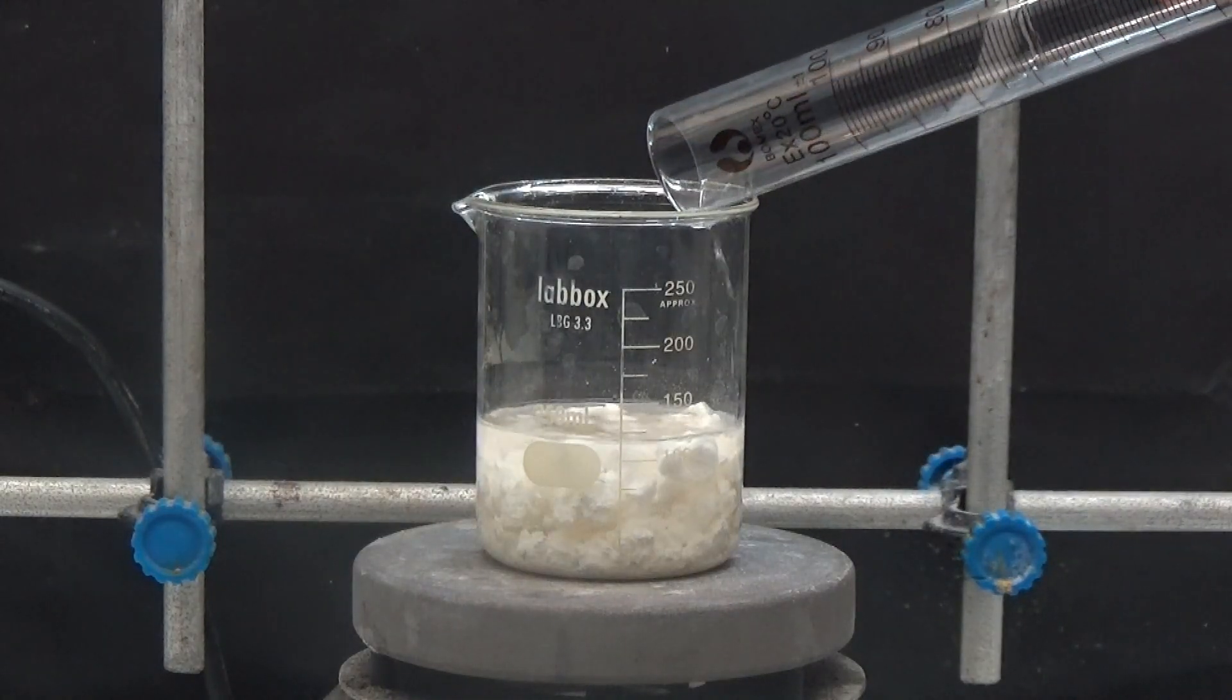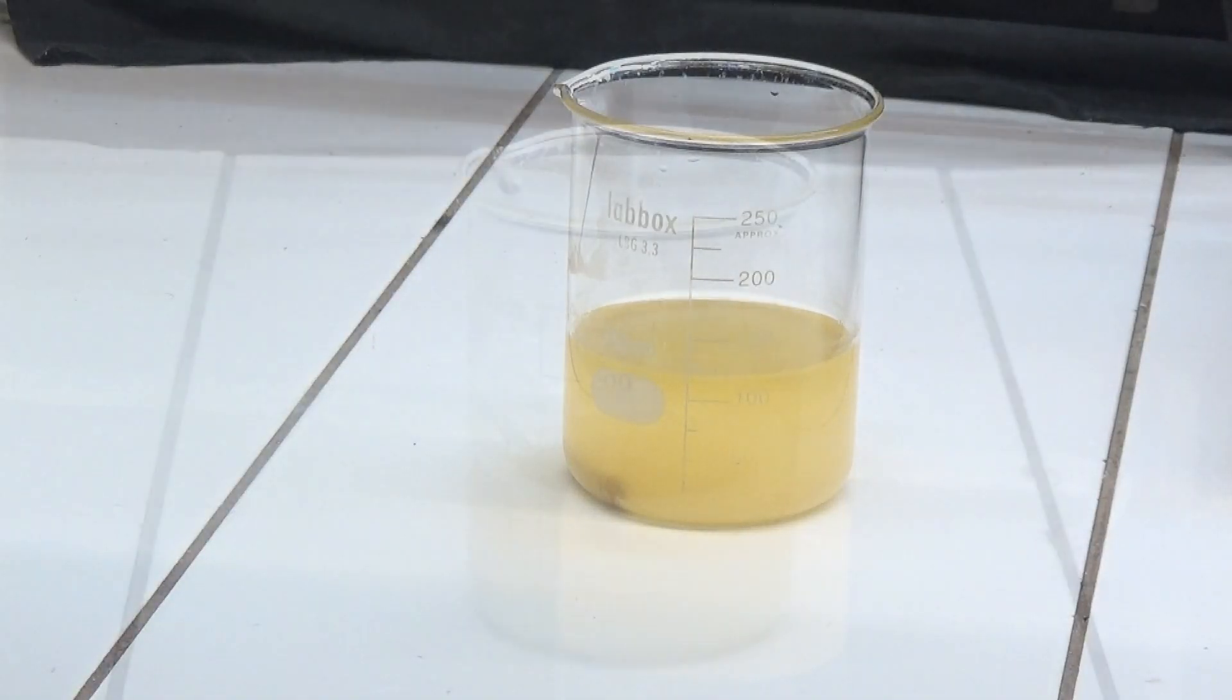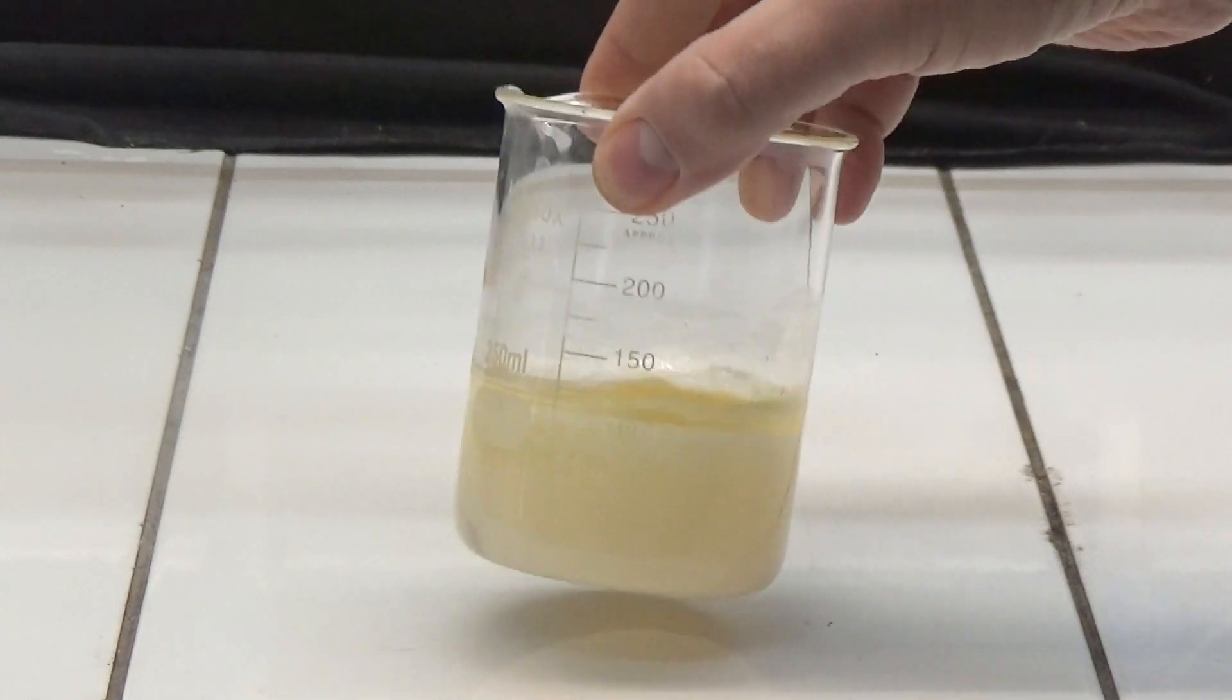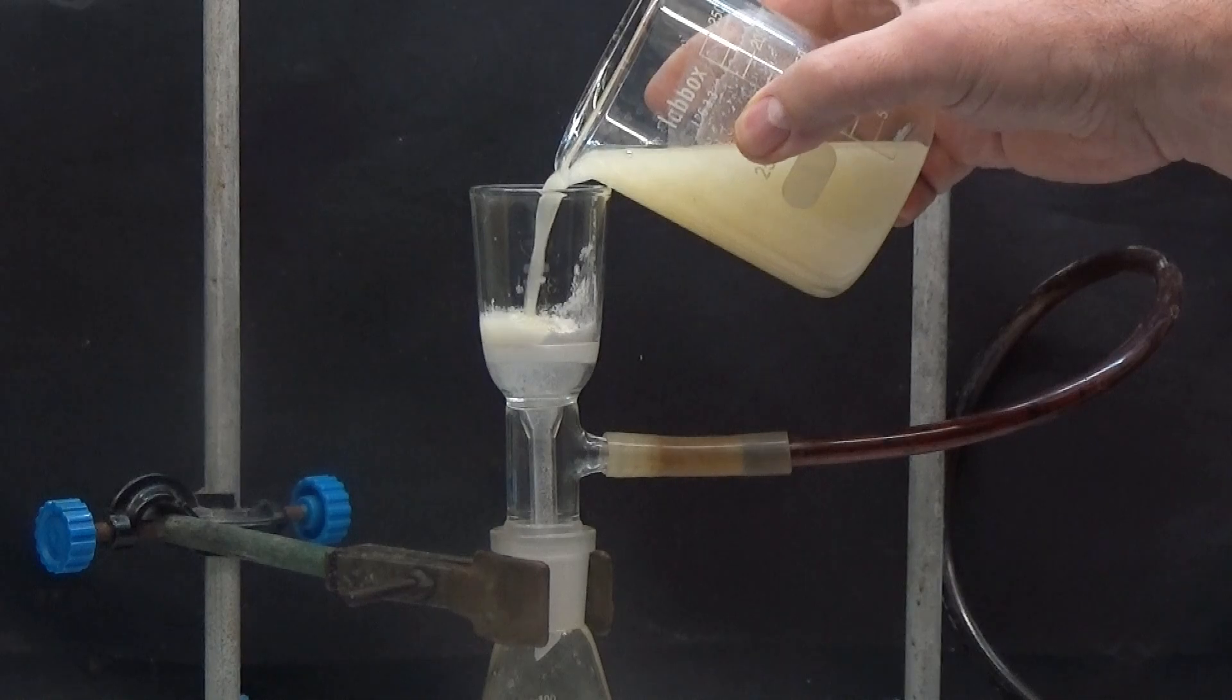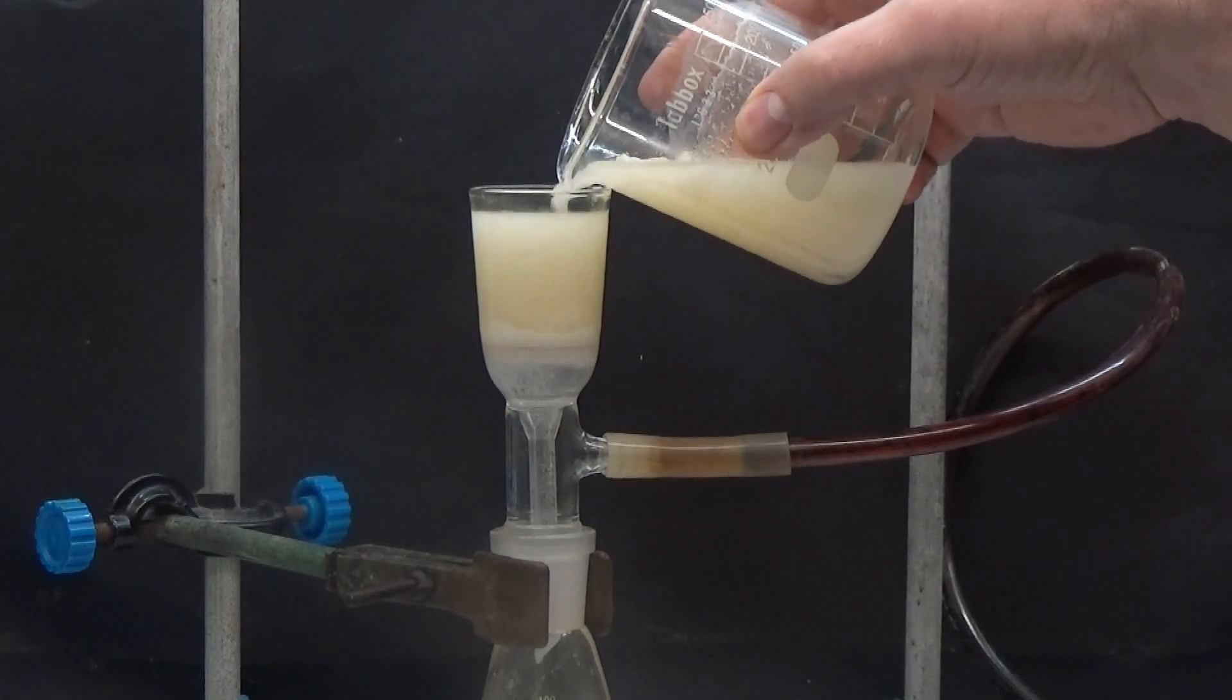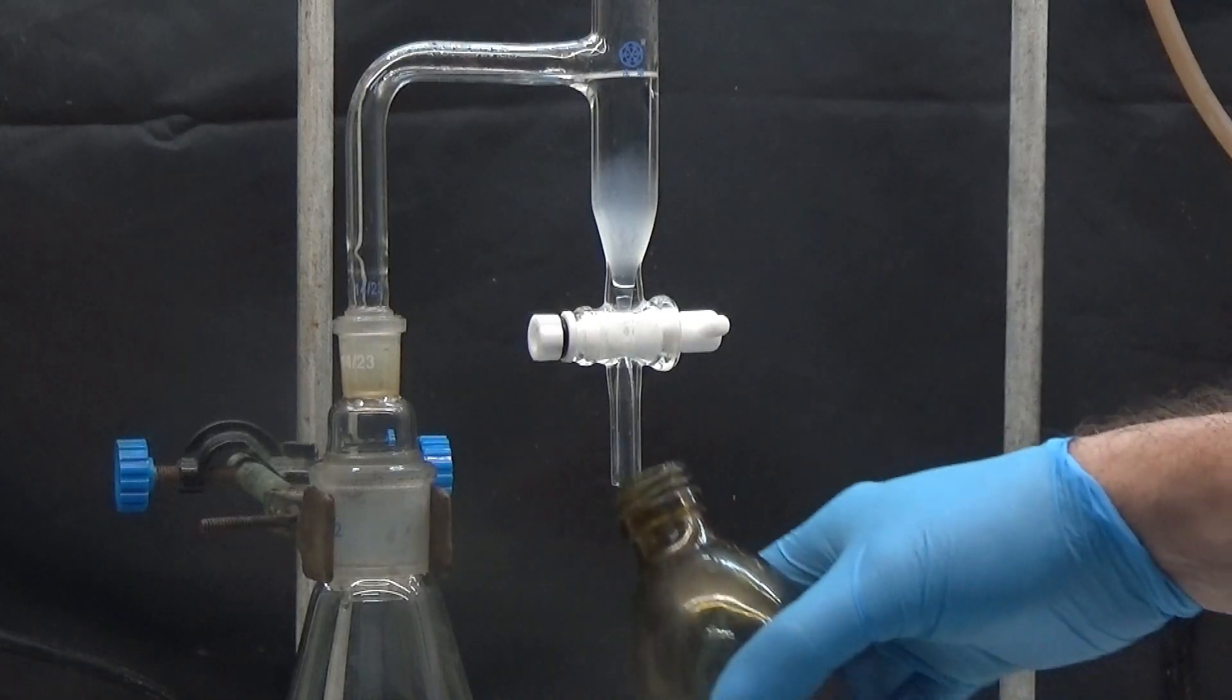To purify the acid we recrystallize it in toluene. Dilute in boiling toluene, 6 grams of acid for each 50 milliliters of toluene. Allow to cool and discard the first crystallization. Collect the first crystallization and test the melting point. The first crystals have a very high melting point.